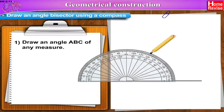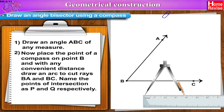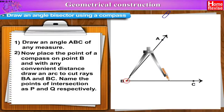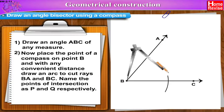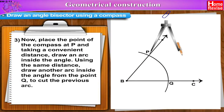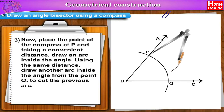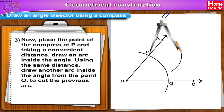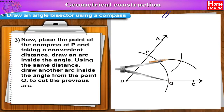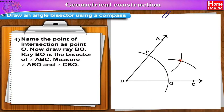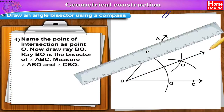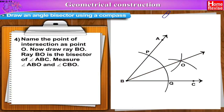Draw an angle ABC of any measure. Now place the point of the compass on point B and, with any convenient distance, draw an arc to cut rays BA and BC. Name the points of intersection as P and Q respectively. Now place the point of the compass at P and, taking a convenient distance, draw an arc inside the angle. With the same distance from point Q, draw an arc to cut the previous arc. Name the point of intersection as point O. Now draw ray BO. Ray BO is the bisector of angle ABC.